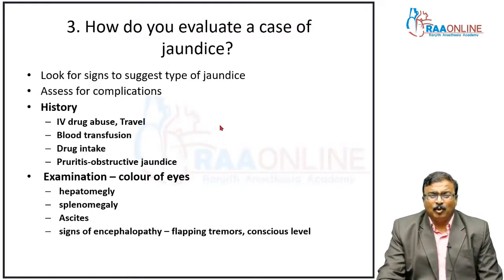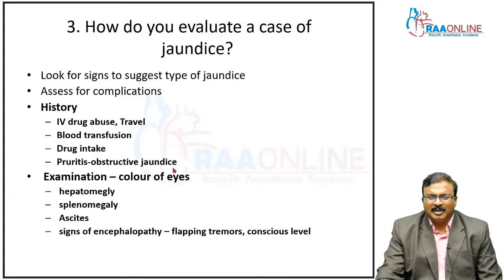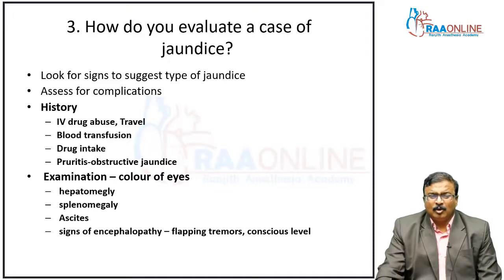Any patient with jaundice — acute febrile jaundice — what are the features you look for? You look for signs to suggest the type of jaundice, and very specifically you look for complications, whether the patient has developed complications. Is there a history of IV drug abuse, history of travel, history of blood transfusion, drug intake, pruritus? Pruritus suggests obstructive jaundice or prominent cholestasis. You look for the color of eyes and look for hepatosplenomegaly and ascites.